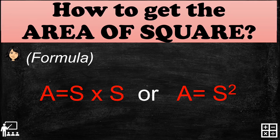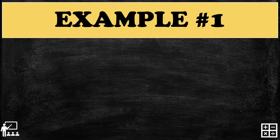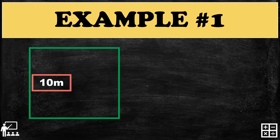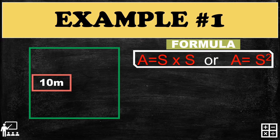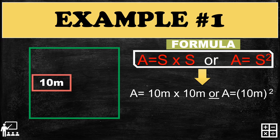For example number one, I have a square which measures 10 meters. We use the formula A equals S times S, where S is the measurement of the sides of a square. We can also use A equals S squared. Substituting the measurement of the sides, which is 10 meters: A equals 10m times 10m, or A equals (10m) squared.